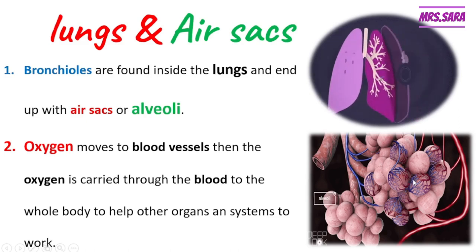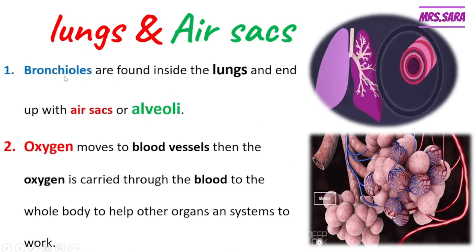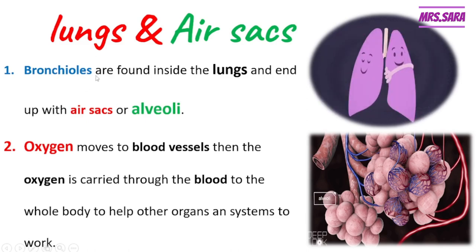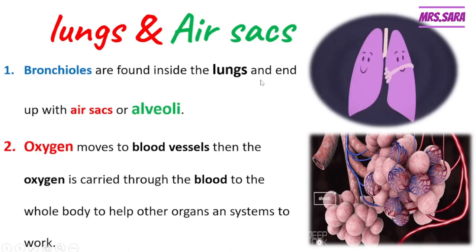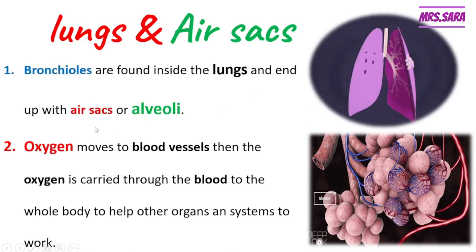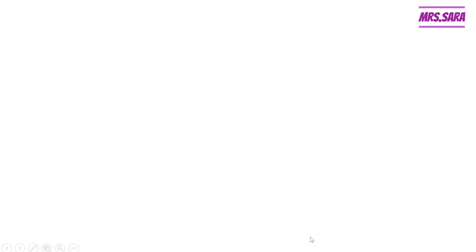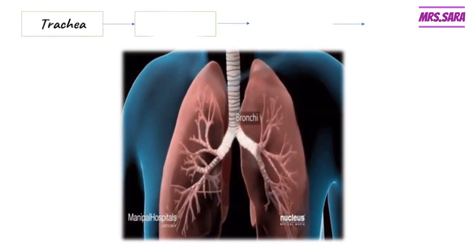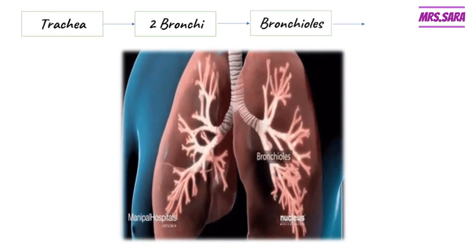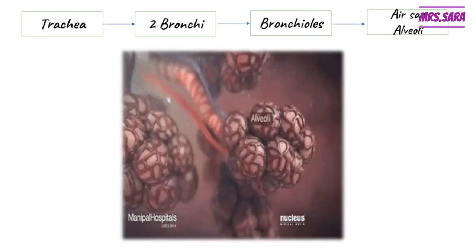When the air arrives at the air sacs, the oxygen moves through them to the blood vessels, then to the blood, then to the whole body, to help the other organs and systems do their work. So inside the lungs we have bronchioles ending with alveoli, and oxygen is carried through the blood to the whole body.